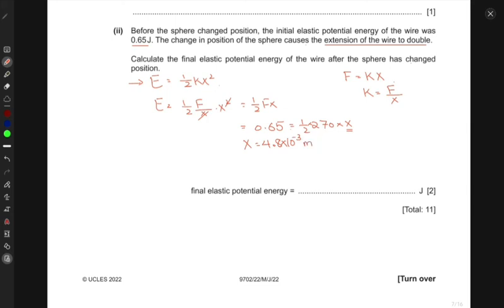So that's your X. Now we can use another method as well. In fact, a relatively simpler method. Because we don't need to do any of these calculations. If you just look at this equation, it says that E is directly proportional to X squared. The rest is just a constant. Now, what would be the final value of E?